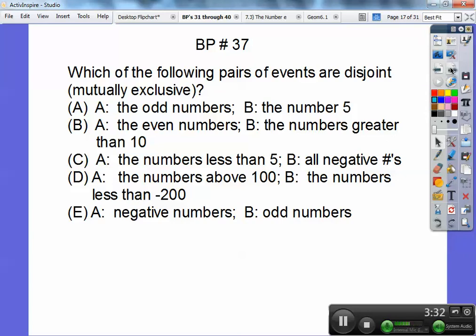Which of the following pairs of events are disjoint or mutually exclusive? This means they can't share anything. They don't have any intersection. A, the odd numbers. B, the numbers less than 5. No, there's numbers that are less than 5 that are odd. So it's not that one. The even numbers and the numbers greater than 10. No, it's not that one either. The number less than 5 and then all negative numbers. No, there's negative numbers that are less than 5. The numbers above 100 and the numbers less than 200. That's it. There's no intersection with that one. So it's choice D.